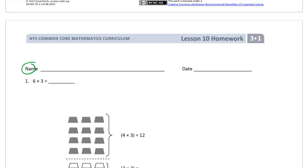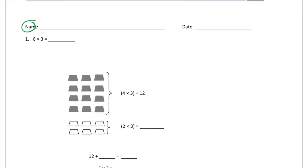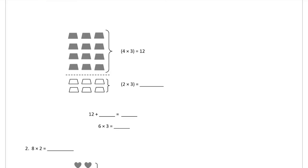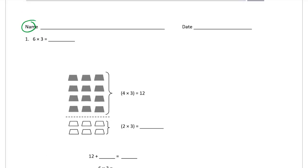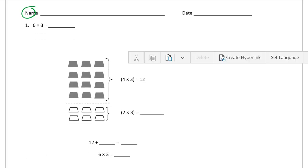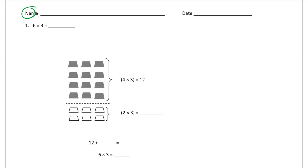We're working on 6 times 3 equals something. We're using the distributive property with arrays to look at these. And there we go. Now, 6 times 3, we practice this a lot. We know it's 18.